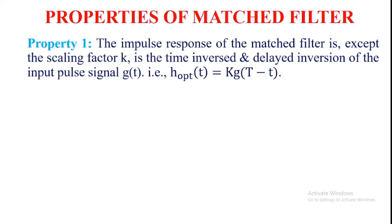The matched filter is an optimum device for the detection of a received pulse signal affected by noise, by using a linear time-invariant filter to improve the output signal-to-noise ratio. The first property of the matched filter is: the impulse response of the matched filter, except for the scaling factor, is the time-inverse and time-delayed inversion of the input pulse signal g(t).